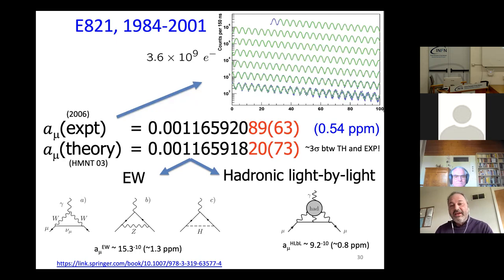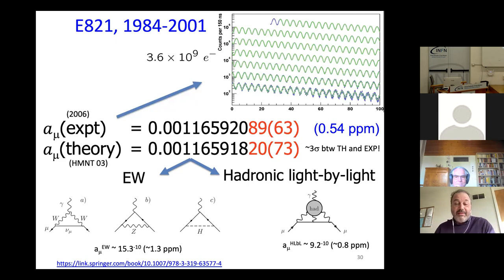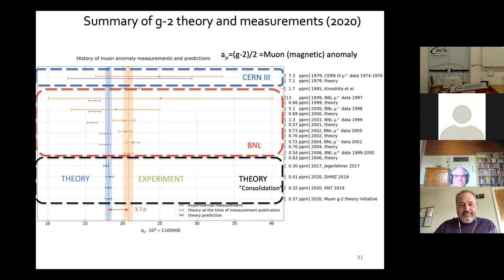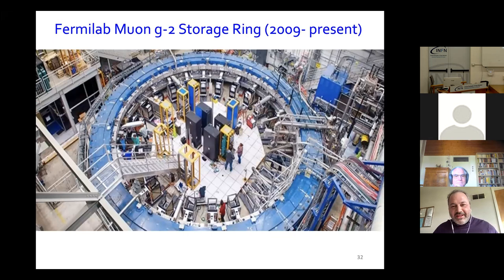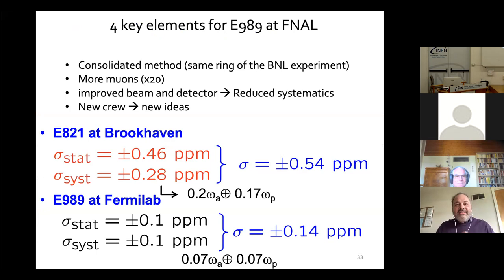Brookhaven improved on CERN-3 by a factor of 15, reaching 0.54 ppm. At that level you are sensitive not only to the hadronic light-by-light contribution but also to electroweak contributions. The experiment running at the beginning of the 2000s showed something like two to three sigma discrepancy — depending on the calculation — and this was of course the reason why a Fermilab experiment was decided. The superconducting magnet was shipped from Brookhaven to Fermilab.